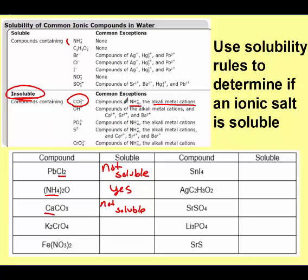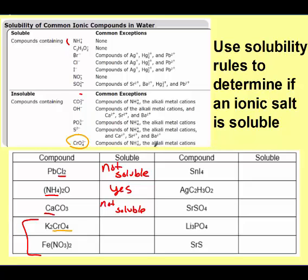Pause the video and try the next two on your own. For chromate: chromates are insoluble, but this is an alkali metal, therefore it will be soluble. You also could have solved it by recognizing it's a group 1A metal — all group 1A metals will be soluble. If it's group 1A and ionic, it will be soluble. For the next example, we have nitrates. All nitrates are soluble with no exceptions, therefore it has to be soluble.